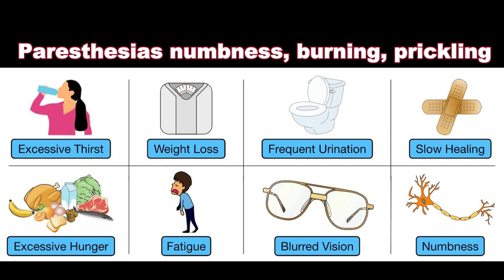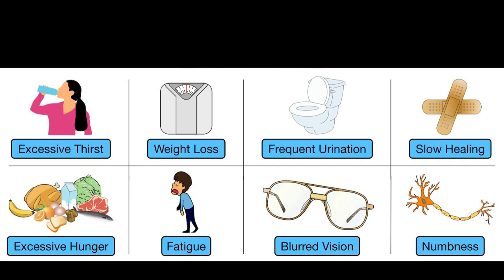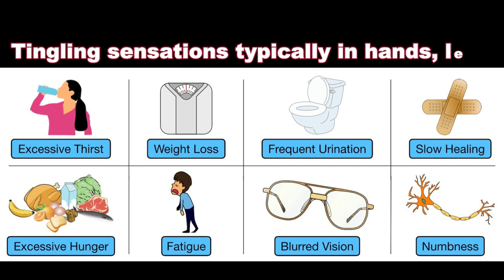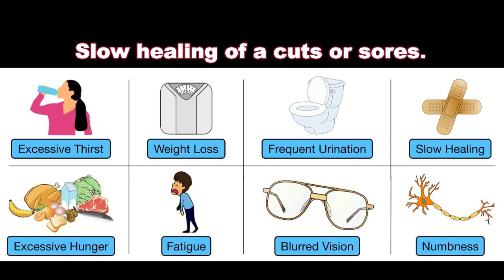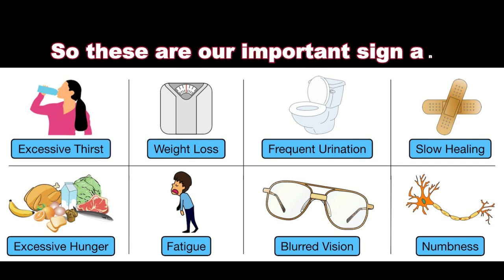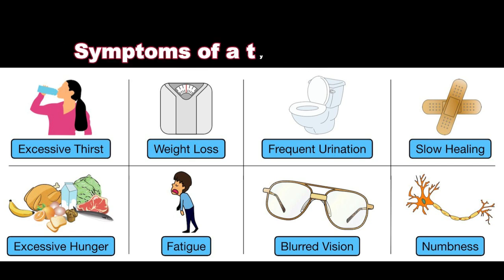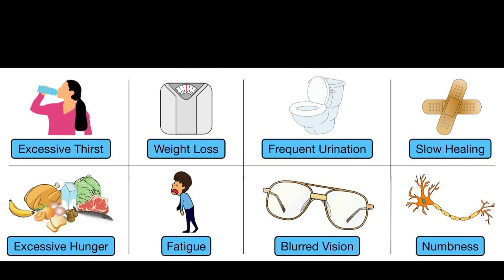Paresthesia means numbness, burning sensation, prickling or tingling sensations, typically in the hands, legs, or feet. Slow healing of cuts or sores is also a symptom. These are the important signs and symptoms of type 2 diabetes mellitus.